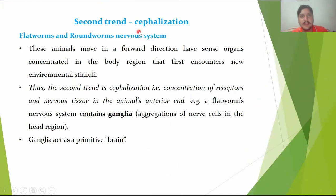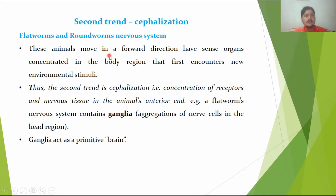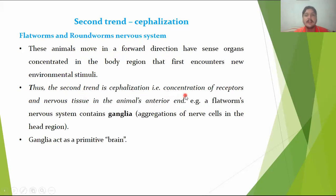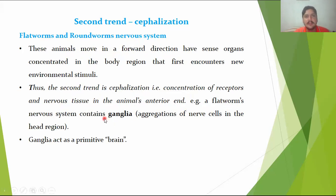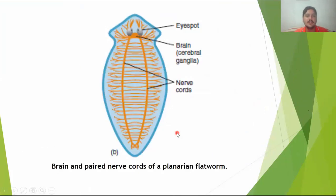The second trend is cephalization — a very important trend. Cephalization means the formation of the head and the formation of the brain. Flatworms and roundworms have a nervous system in which, as the animal moves in the forward direction, it has sensory organs like eyespots. There is a concentration of receptor and nervous tissues at the animal's anterior end. This structure is called ganglion — ganglion is the concentration of cell bodies and acts as a primitive brain.